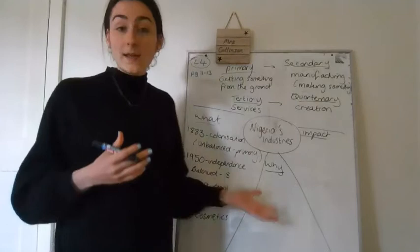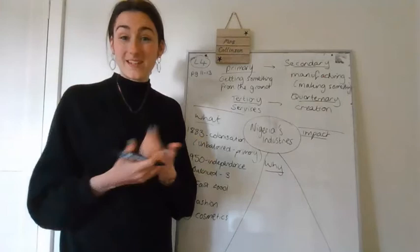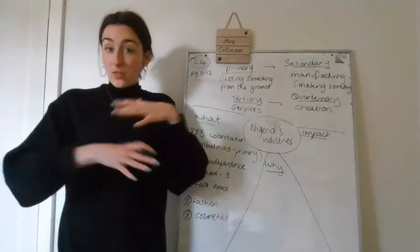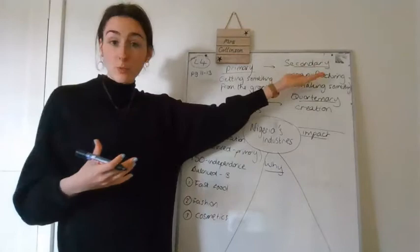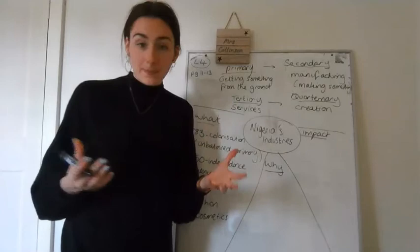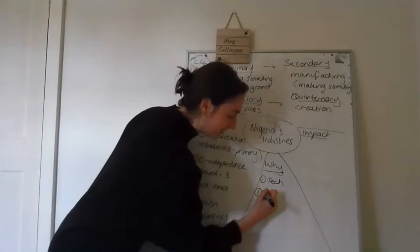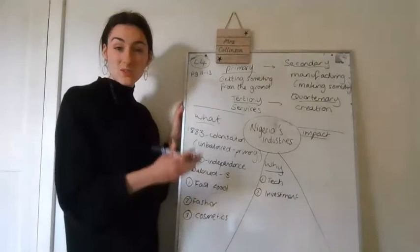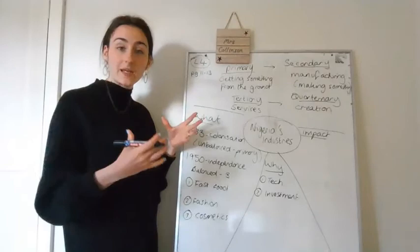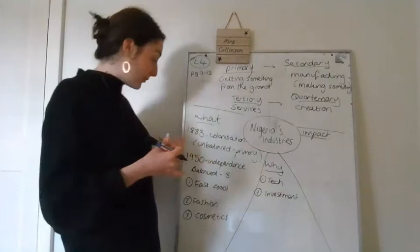So why have these changes taken place? Now, the main reason is actually technology. So naturally, over time, Nigeria, but the whole world has gotten better at technology, we've got more technology, we can have more factories, because we can produce more machinery better, and more cheaply. So one reason is tech, we've got better tech. Another reason is investment. There's been more money coming into Nigeria, mostly because of oil, and their businesses to do with oil and shell coming in as a big business. So you've got more investment from overseas.